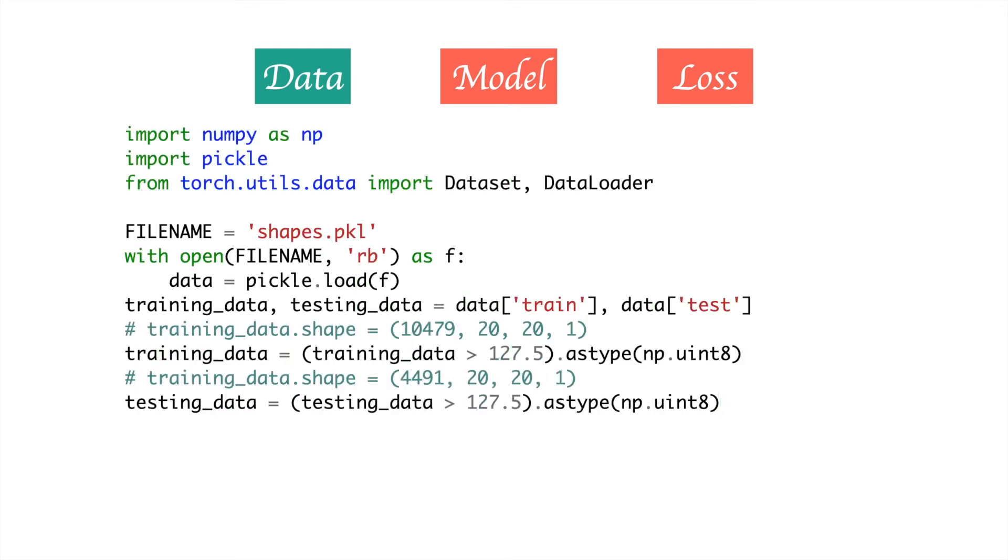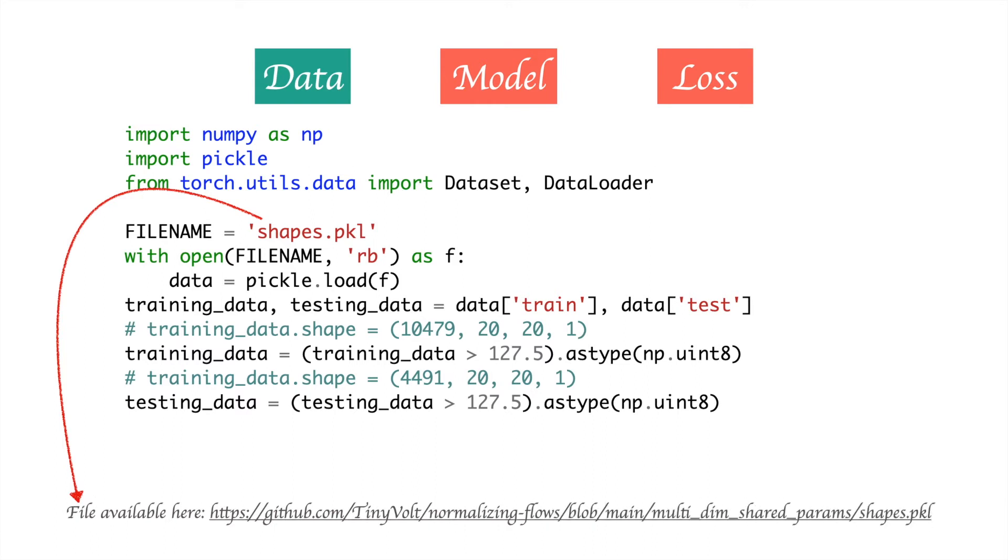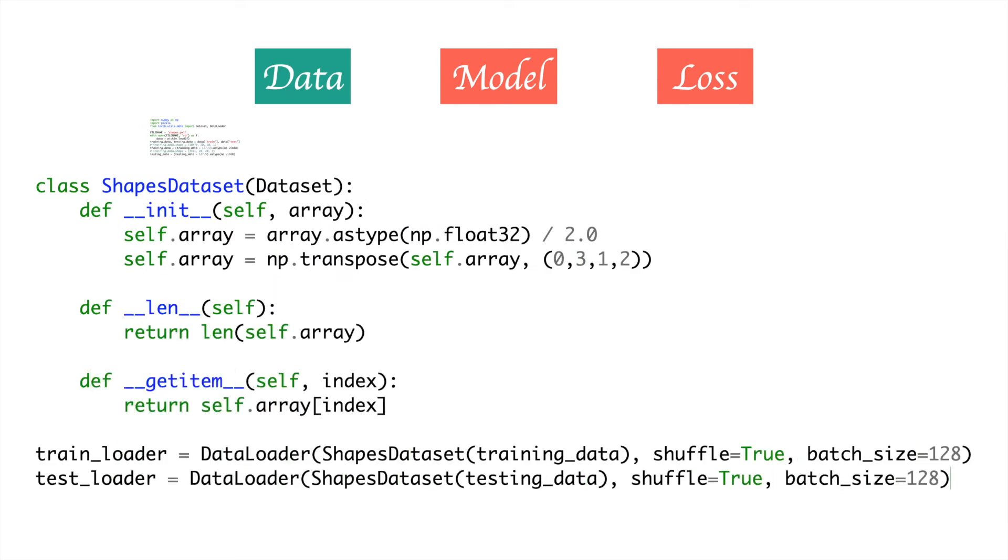These shapes have been stored in a file named shapes.pkl, and the link to this file will be available in the description of the video. We simply open the file and then create a simple dataset to read the values using the standard PyTorch dataset pipeline. We use a batch size of 128.